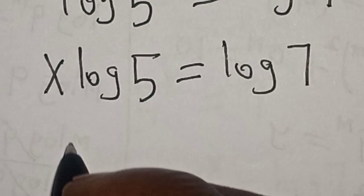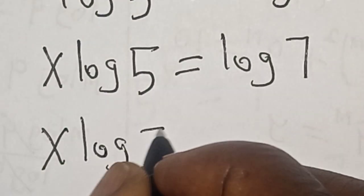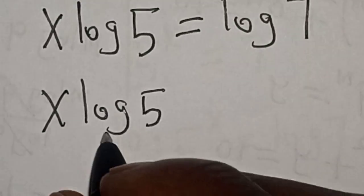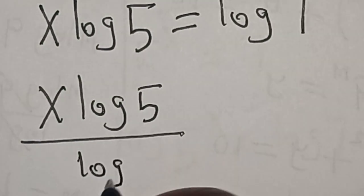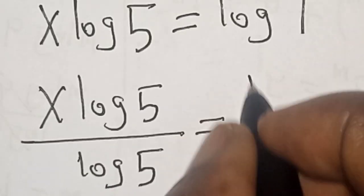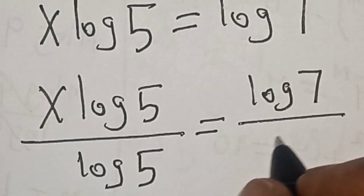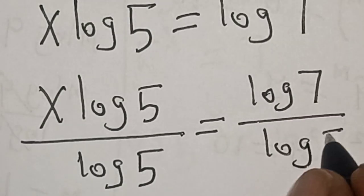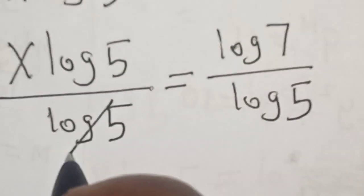We have s log 5 divided by log 5 equals log 7 divided by log 5. Now this will cancel.